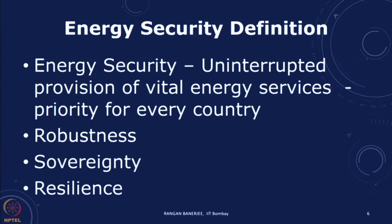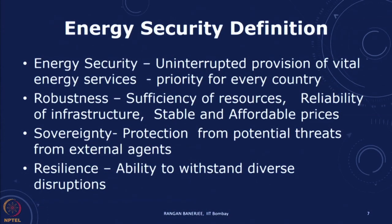There are different dimensions of energy security, classified into three parameters. The first is robustness, the second is sovereignty, and the third is resilience. Robustness involves the sufficiency of resources, reliability of infrastructure, and stable and affordable prices — meaning that even if there are some fluctuations or changes, we should still be able to provide energy. Sovereignty means that the country has control over its energy use, with protection from potential threats from external agents. Resilience means the ability to withstand diverse disruptions.